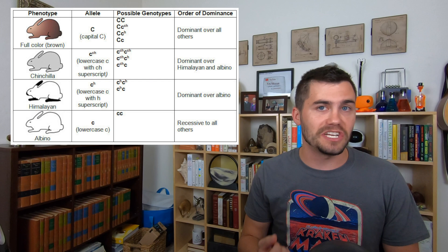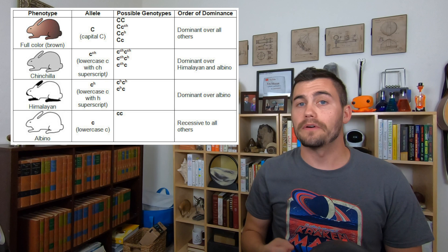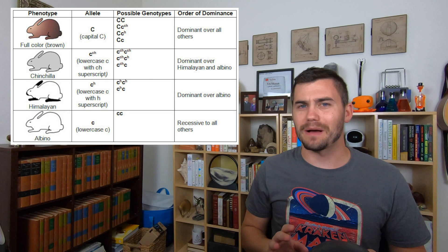The allele for a gray chinchilla coat is recessive to the brown coat, but dominant over the other two. So there are three different genotypes that give rabbits the chinchilla coat.